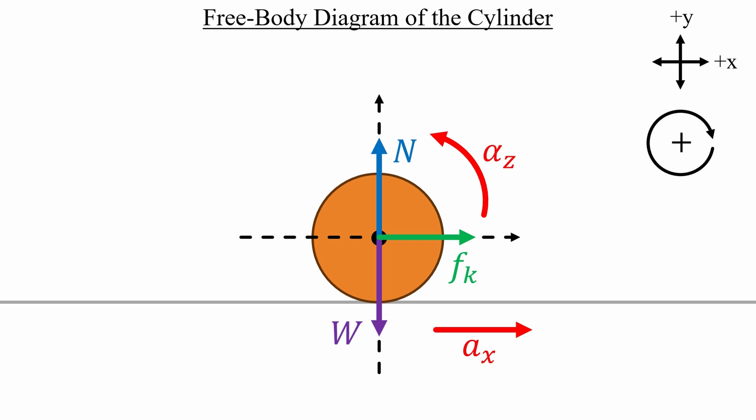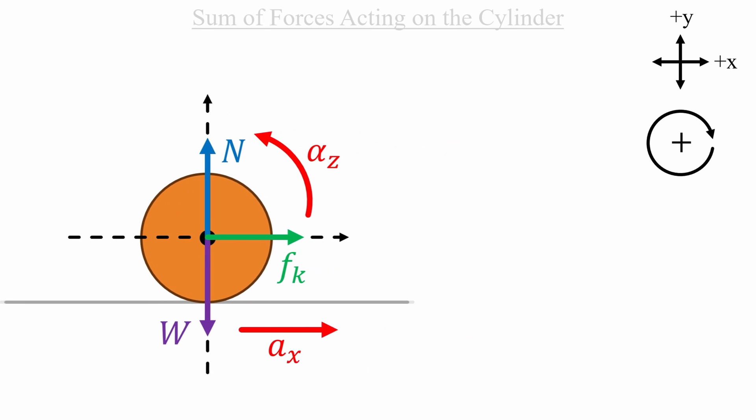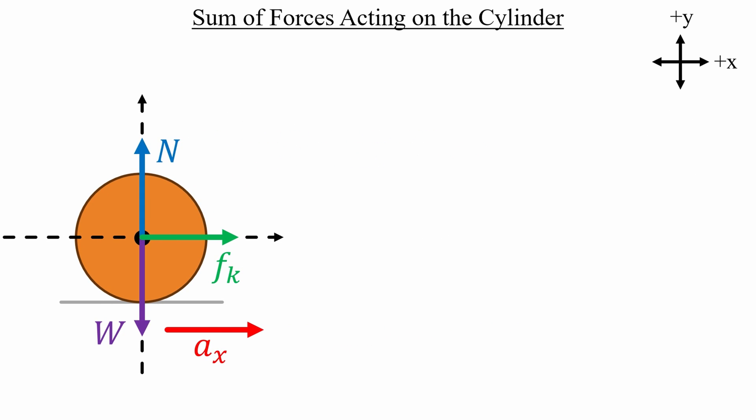I'm going to move everything over to the side and ignore the rotational stuff for now, so we can focus on the sum of forces. Let's replace the kinetic frictional force with its definition, and then hop over to the sum of forces in the y direction to get the value of n. Our cylinder doesn't accelerate vertically while moving. So we get the normal force minus the weight being equal to zero. And thus, these two forces are equal to each other.